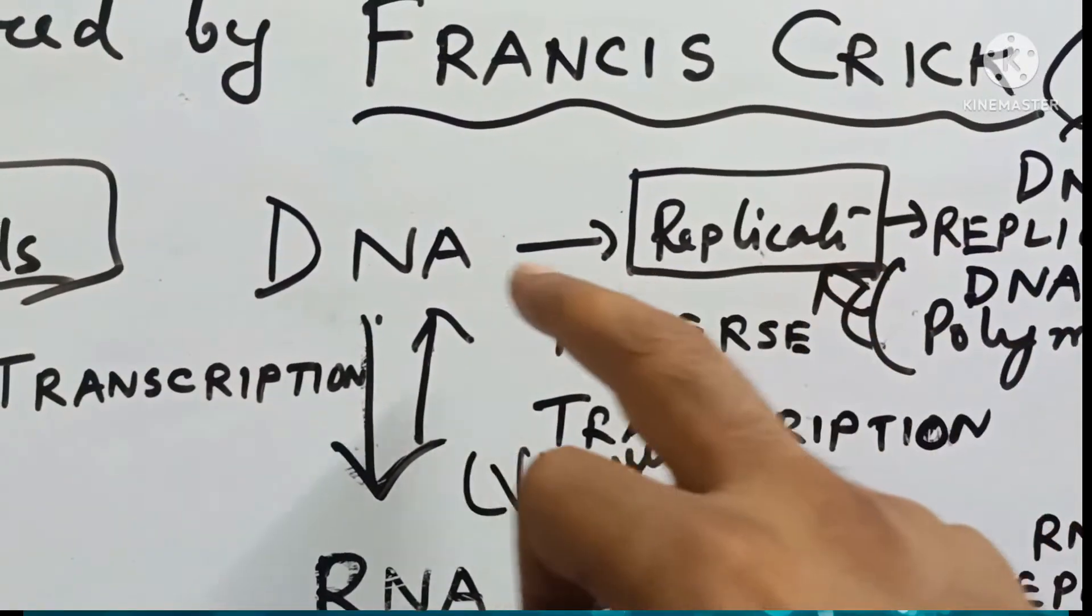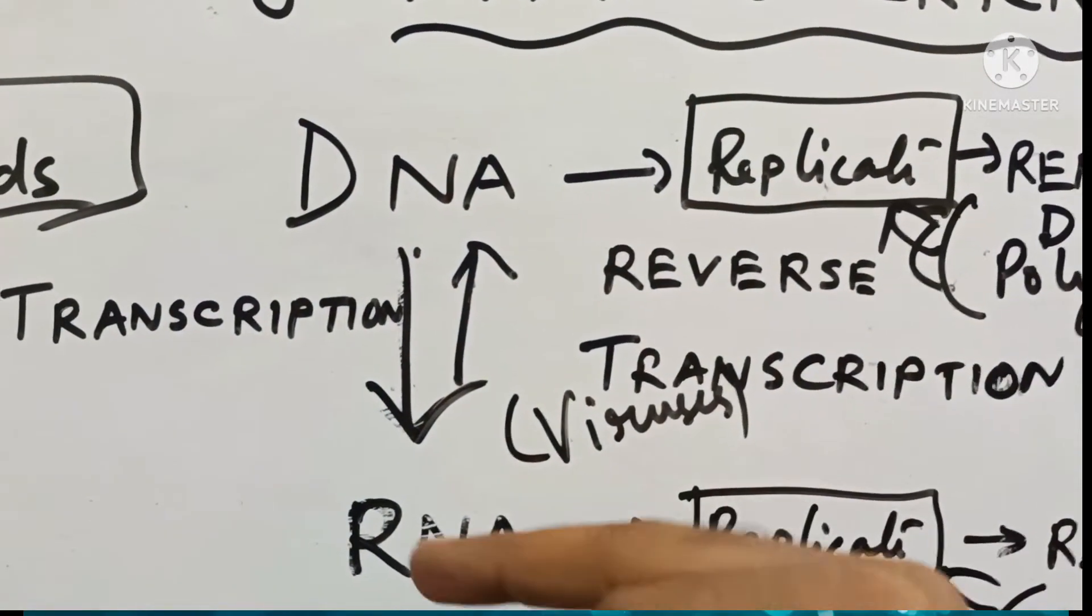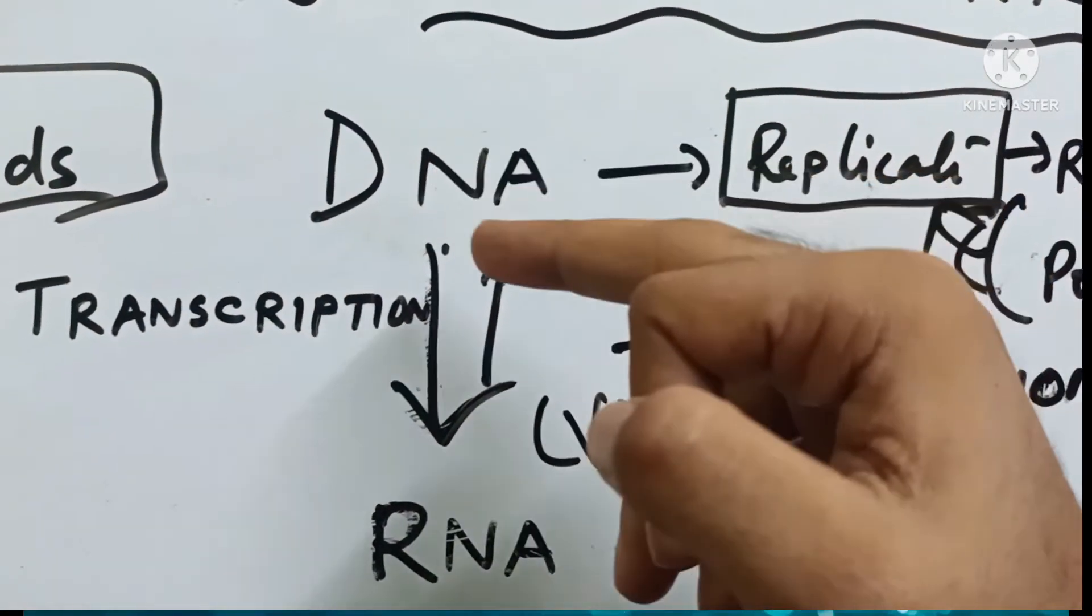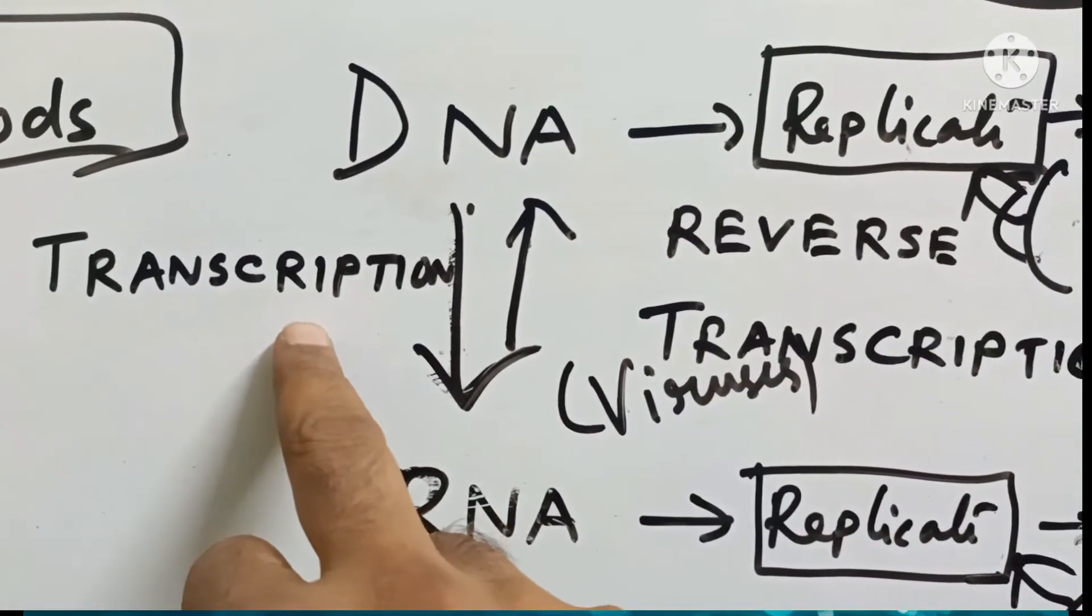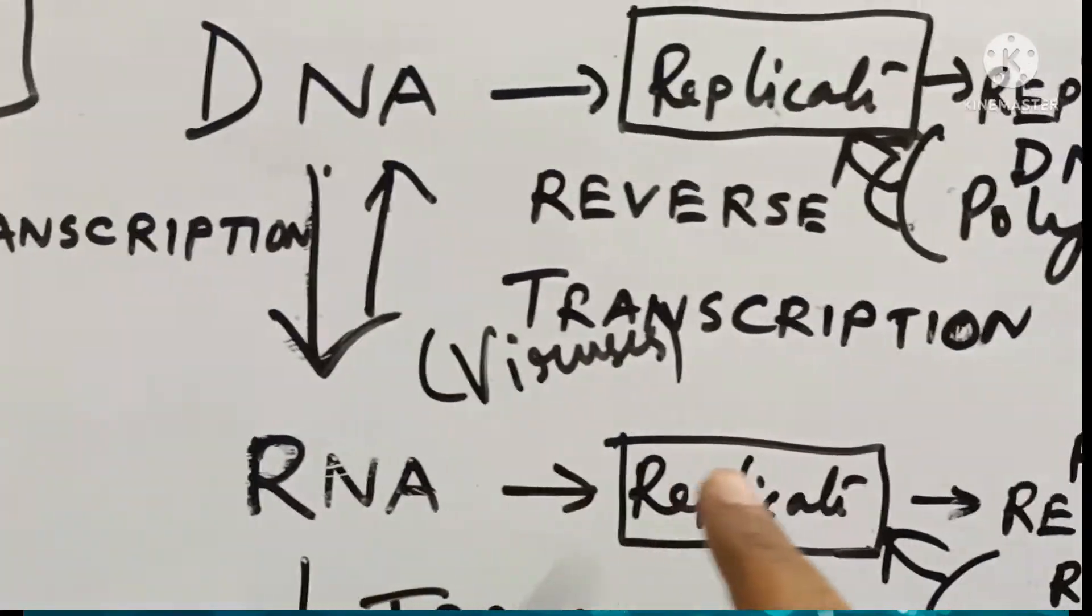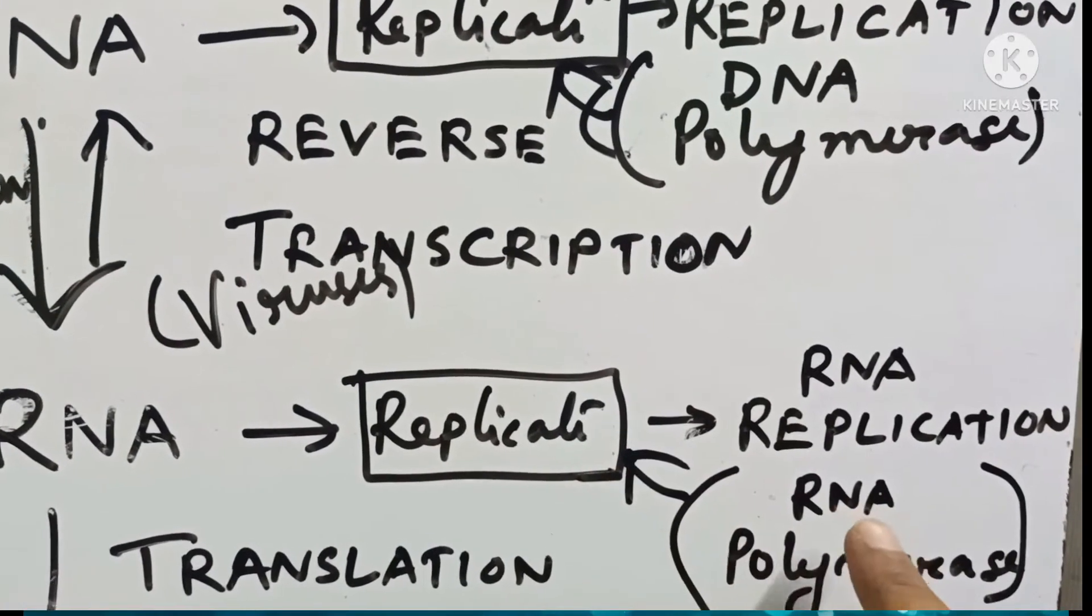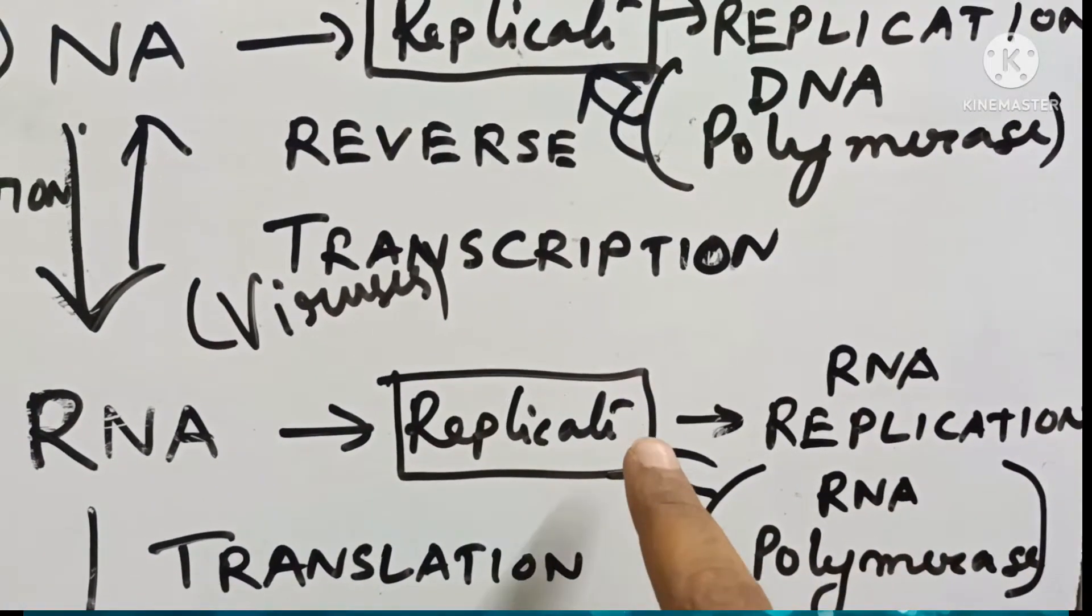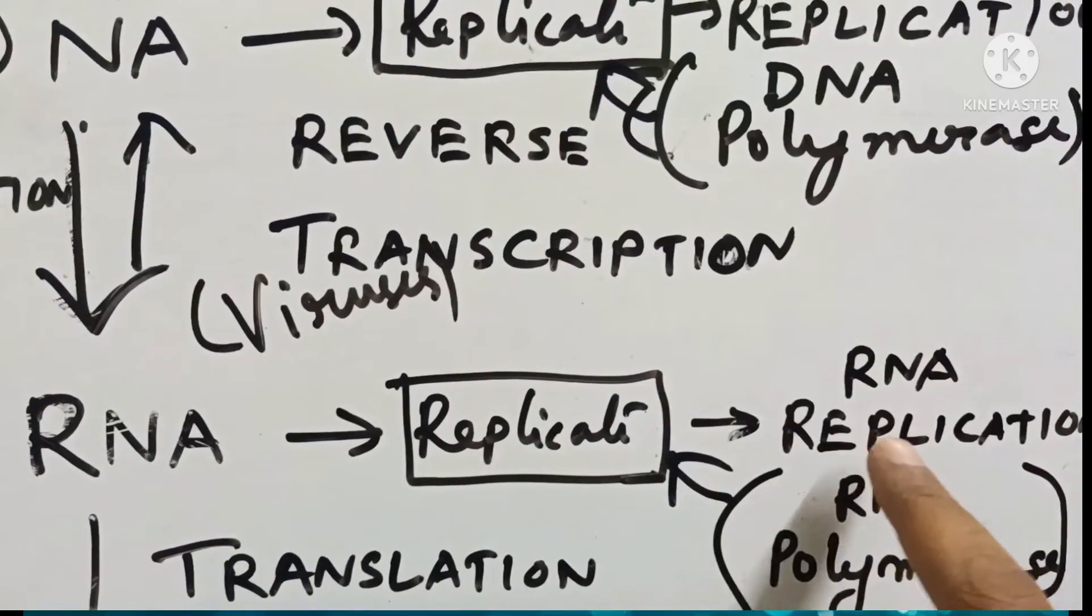Next, DNA converts into RNA and the conversion of DNA to RNA is called transcription. So, like DNA replicates, RNA also replicates with the help of enzyme RNA polymerase and this process is known as RNA replication.